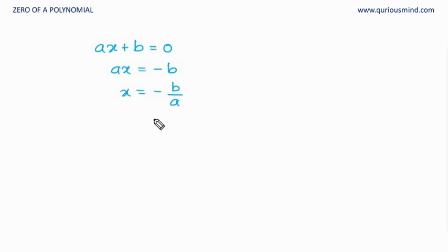If we want to find a 0 of a linear polynomial it is always in the form minus b upon a, where b is the constant term in the linear polynomial and a is the coefficient of x, minus b upon a.